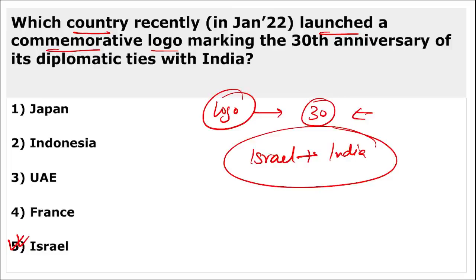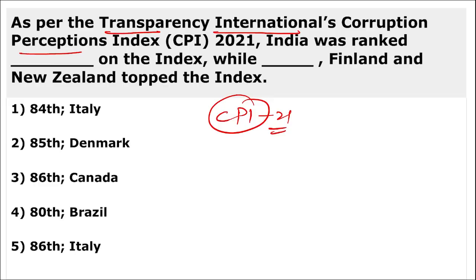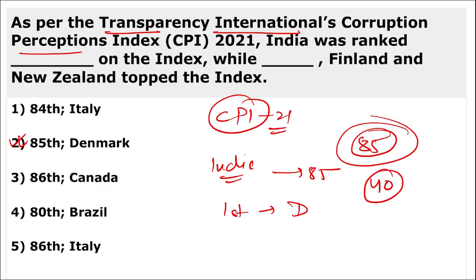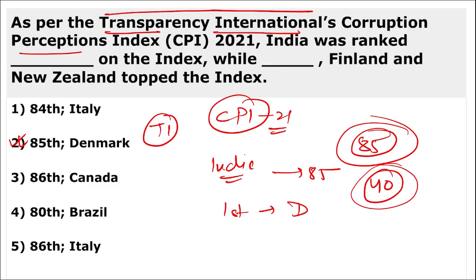As per the Transparency International's Corruption Perception Index for 2021, India was ranked 85th. Denmark topped the index. India's CPI score was 40. The Corruption Perception Index is released by Transparency International (TI).